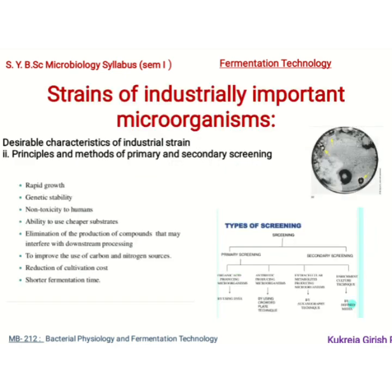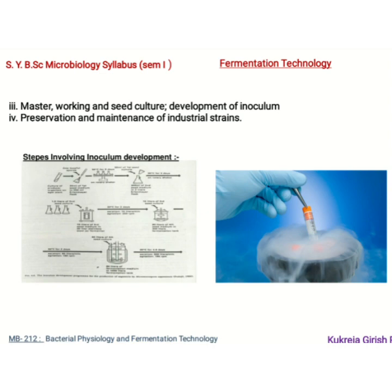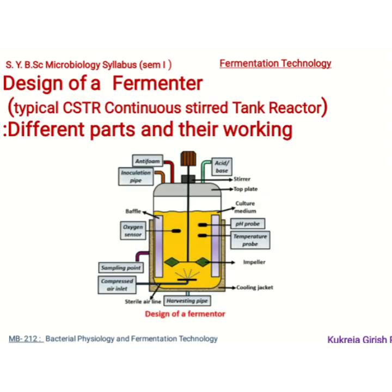We will know about the products produced and the microbes producing them. Then we will talk about industrially important microorganisms — industrial strains — covering what characteristics are required in a typical industrial strain, and the ways and means to screen them: primary screening, secondary screening, how they are maintained, the master culture, working seed culture, how inoculum is developed for a large fermentation process, and how we preserve and maintain these industrial strains.